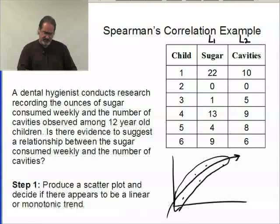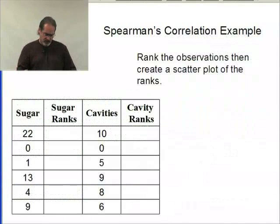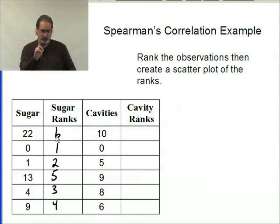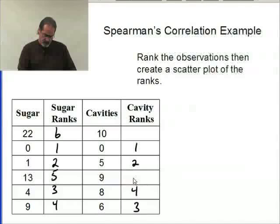Now this is what Spearman's actually does. It actually takes the raw data and converts it to ranks. So in terms of ranks, the 0 would be rank 1—that's the smallest. The 1 would be rank 2. The 4 would be rank 3. The 9 would be rank 4. 13 would be rank 5, and 22 would be rank 6. If I were to sort the data, that's the order that the numbers would come in. But don't sort it—we need to keep them paired with the cavities. For cavities: 0 is the smallest, 5 is the next one, 6 is the next, 8 is the next one, and then 9 is the 5th rank, and 10 is the 6th rank.